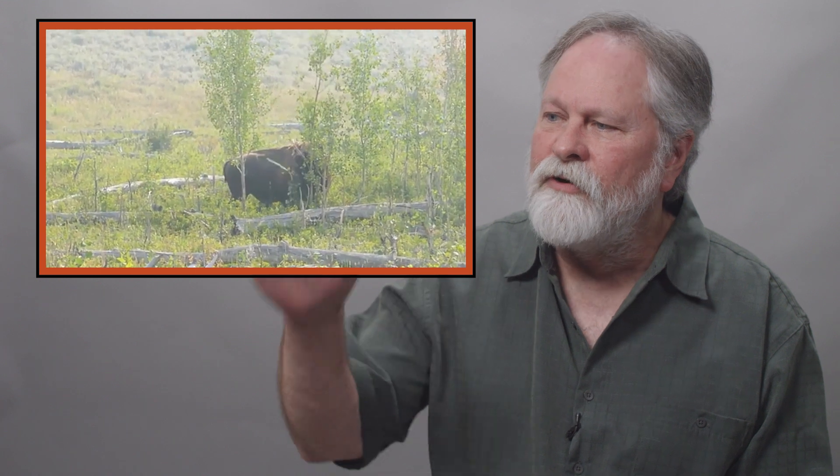As the video begins, the bison is breaking an aspen sapling with his horns. He's kind of twisting it around and then it breaks, and then you see a piece of it hanging off his horn and falling down.